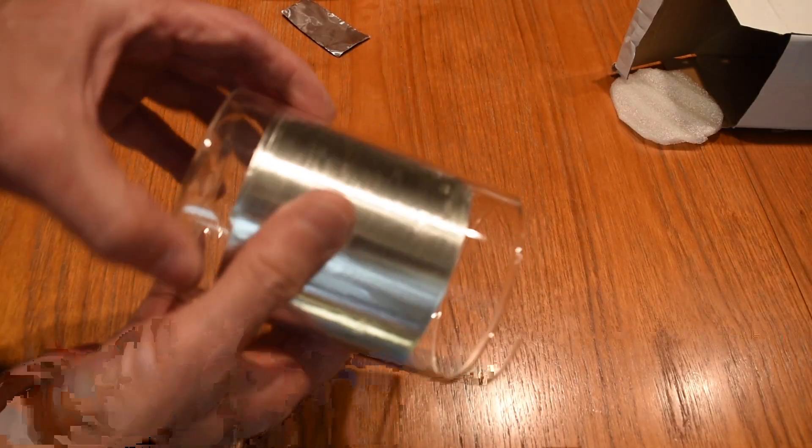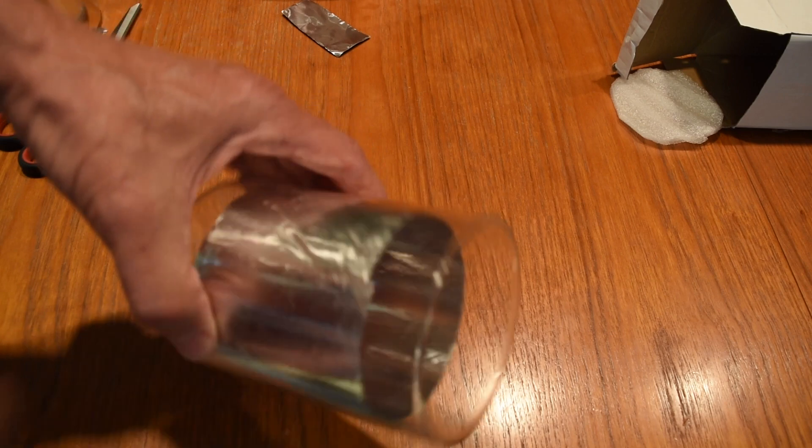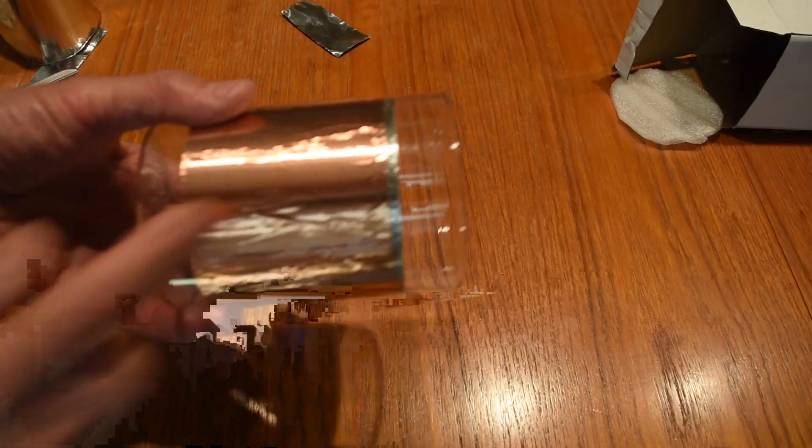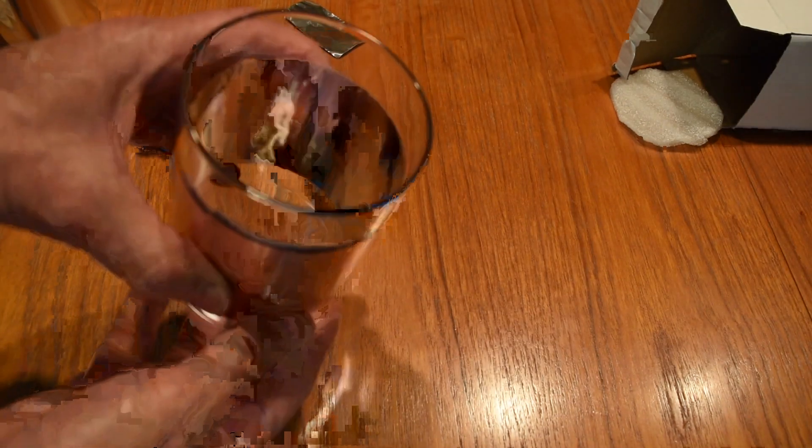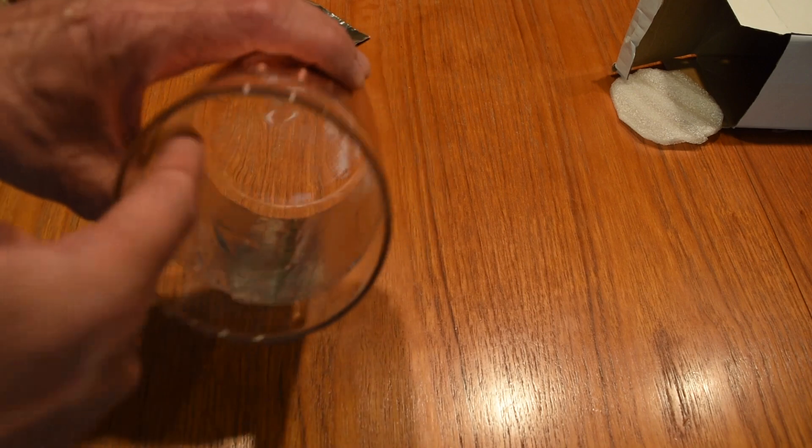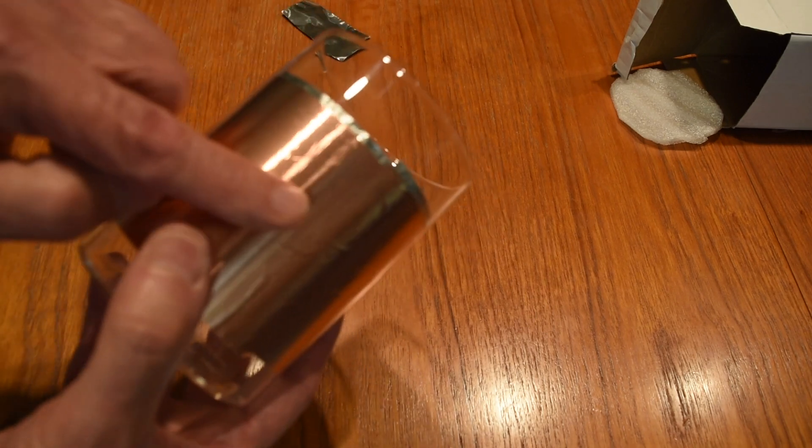I've put the aluminum tape around the inside of the jar. And now I've placed the copper tape around the outside. So you can see the aluminum inside conductor and the copper outside conductor of our capacitor.